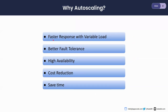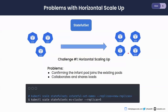Automating scaling benefits us with faster response to variable loads — when the load on the cluster changes, it responds quickly. It provides better fault tolerance, high availability, and cost reduction. When we apply auto-scaling to our stateful workload, it will only consume the resources it needs, saving cost. And since we don't need continuous monitoring, it saves lots of time.